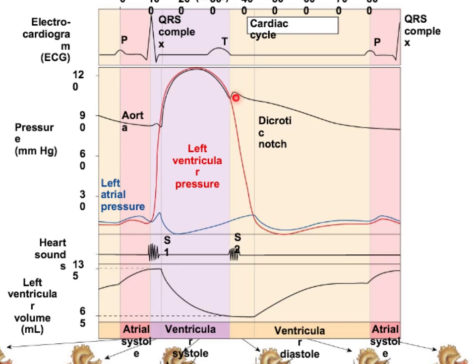After closure of the aortic valve, the ventricle goes through isovolumic relaxation — no change in volume, but a decrease in pressure. Isovolumic relaxation is necessary to get ventricular pressure lower than atrial pressure. As soon as the ventricular pressure drops below the atrial pressure, you get AV valve opening.